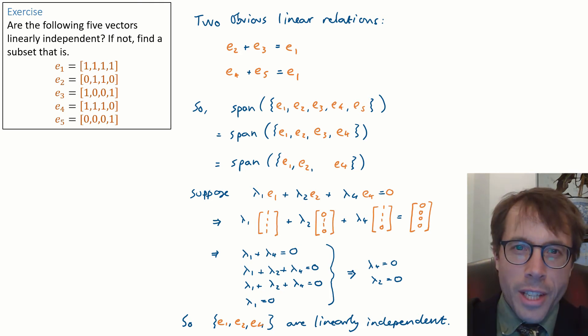When we use linear independence in data science though we generally do want to get linearly independent vectors but without reducing the span. So that's what we work through in this example.